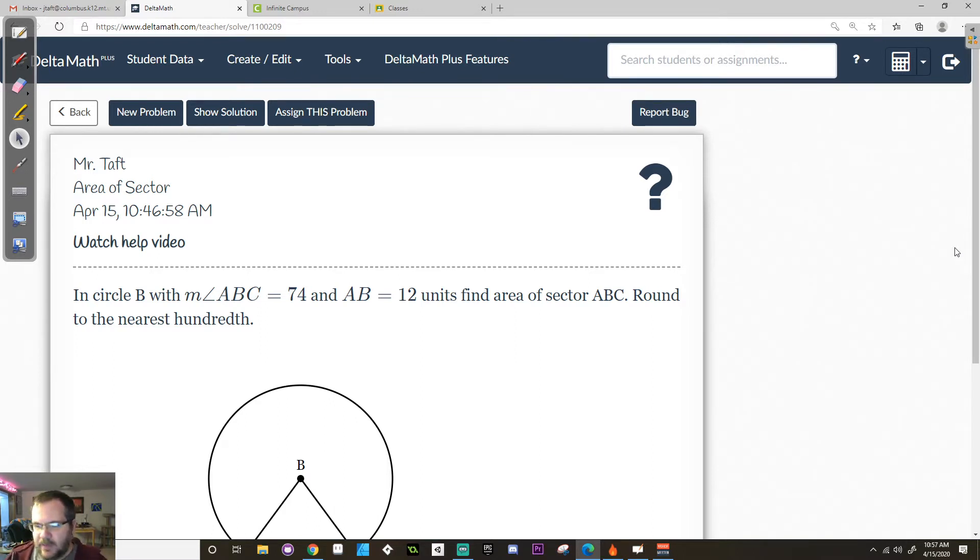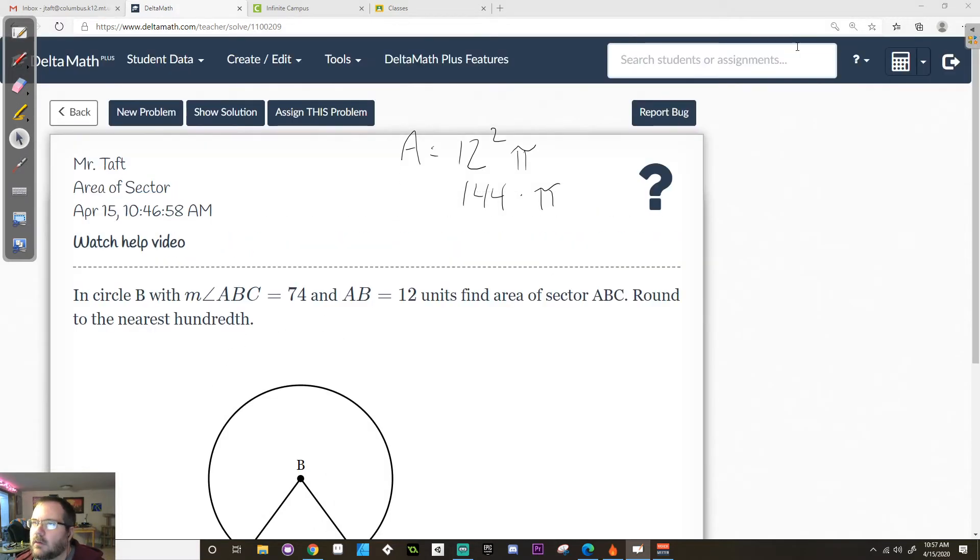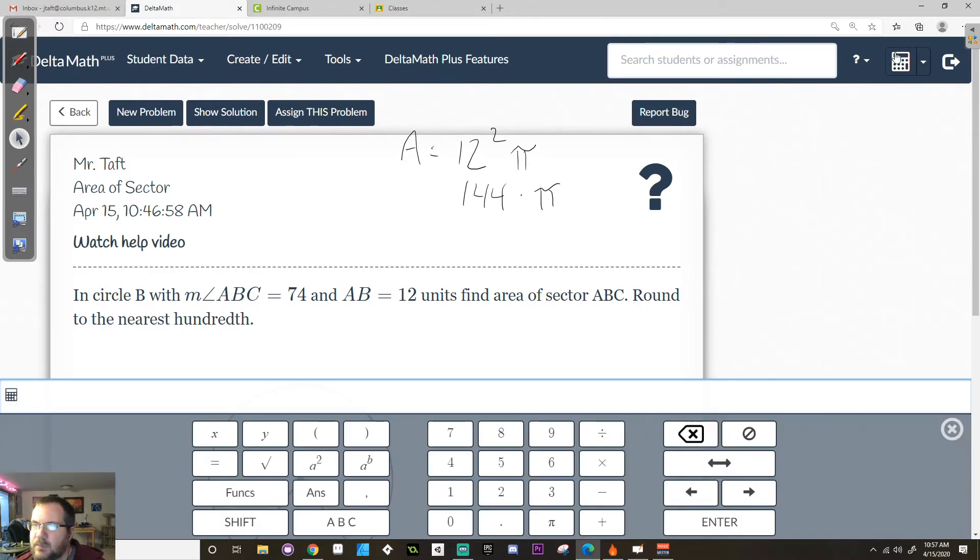So to do that here, the first thing I'm going to do is figure out what the area is. So it says AB is 12. That means that area is equal to 12 squared times pi. 12 squared is 144, it's 144 times pi.